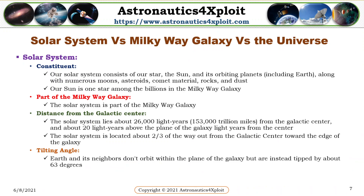Solar System versus Milky Way Galaxy versus the Universe. Our solar system consists of our star, the sun, and its orbiting planets including the Earth, along with numerous moons, asteroids, comets, rocks, and dust. Our sun is one star among the billions in the Milky Way galaxy. The solar system is part of the Milky Way galaxy. The solar system lies about 26,000 light years from the galactic center and about 20 light years above the plane of the galaxy.